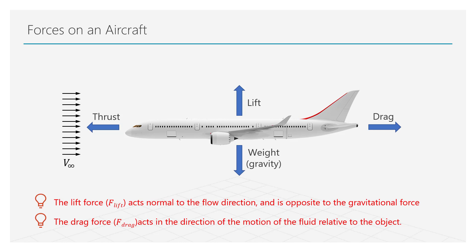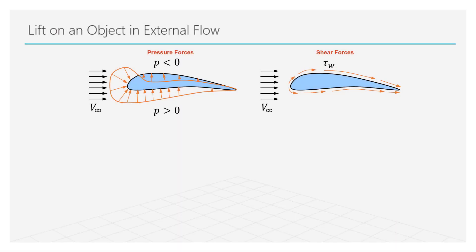Let us now understand each of these forces a bit more in detail. A lift force is generated because of an imbalance in the forces between the upper and the lower surfaces of a body. Let us recall the force distribution on the airfoil we looked at a short while ago. Both the pressure forces and the viscous forces contribute towards the lift force.